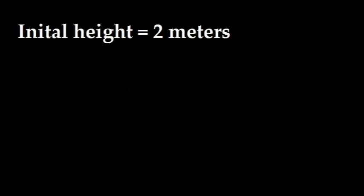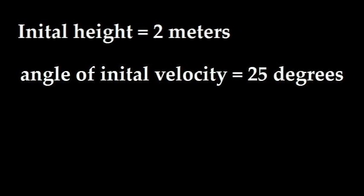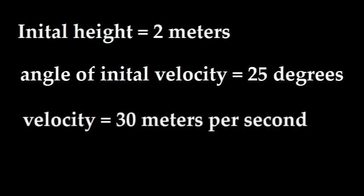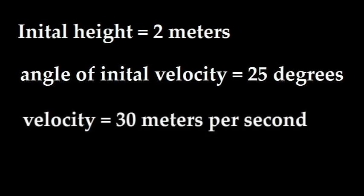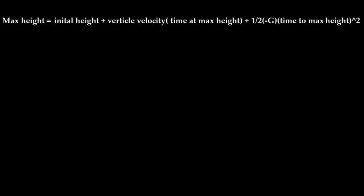Let us begin with maximum height. Maximum height is the highest Y value the object becomes equal to. To solve for the maximum height we list the things we know and our unknowns. We know that Jimmy is two meters tall, he throws the object at a 25 degree angle at 30 meters per second, and the gravitational constant is 9.8 meters per second squared. Maximum height equals initial height plus vertical velocity multiplied by time to maximum height, all added to one half the gravity multiplied by time to max height squared.